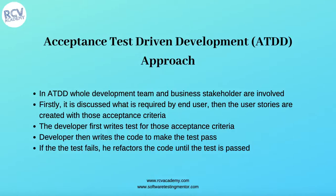Those requirements are defined as the acceptance criteria within the user stories. The developer then first writes tests for those acceptance criteria. In ATDD, during the definition of the story itself, the developer and tester or the whole team defines and writes the test cases for the acceptance criteria. Once the test cases are written, the developer writes code to make those test cases pass.